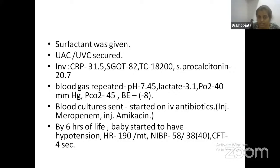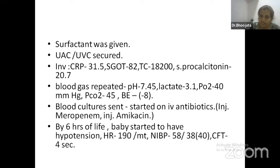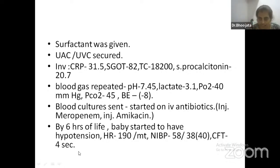CRP was 31, total count 18,000, thrombocytes 20.7, and liver enzymes mildly elevated — all in favor of hypoxic insult. Blood gas showed almost good improvement: pH 7.45, lactate 3, PO2 40 mmHg, CO2 45, base excess minus 8. Blood cultures were sent and the baby was started on IV antibiotics. The baby was now on oscillator with given surfactant and improved gases, but showing some signs in favor of sepsis.